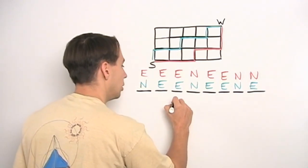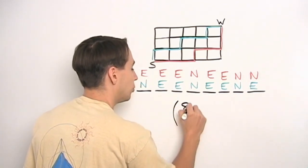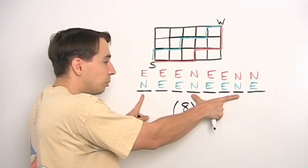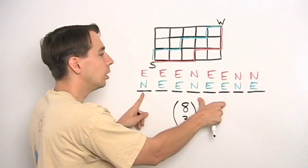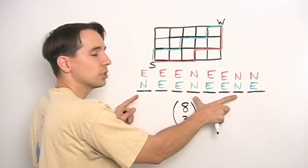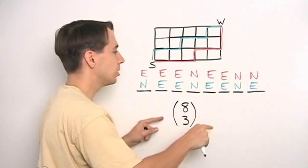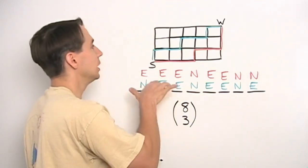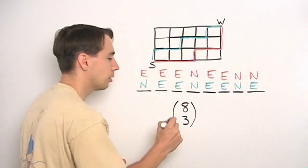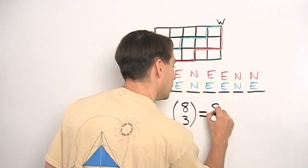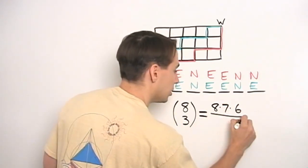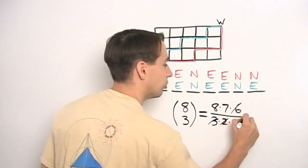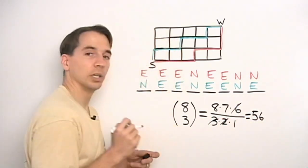I want eight choose three, eight choose three ways to do this because if I'm going to pick these three to be north, it doesn't matter what order I pick those three. I could pick this one, then this one, then this one, or I could have chosen this one to be north first, then this one, then this one. So the order doesn't matter. I have eight slots here. I have to choose three of them to be north. So there are eight choose three ways for me to pick three of my eight steps to be north. And I know how to compute that. That's pretty easy. Eight times seven times six over the three factorial for the three, three times two times one. Three and two makes six. Fifty-six ways for me to get to work.